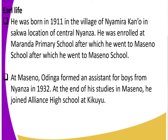After that, he was enrolled at Maranda Primary School, after which he went to Maseno School. From this we can see that Jaramogi Oginga Odinga really valued education. At Maseno, Oginga formed an association for boys from Nyanza in 1932. At the end of his studies at Maseno High School, he joined Alliance High School at Kikuyu.